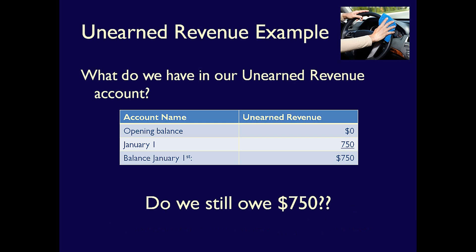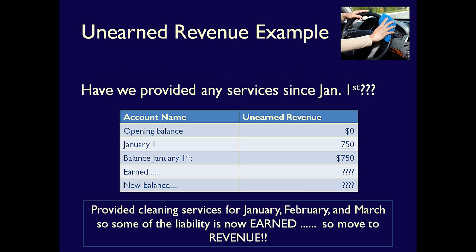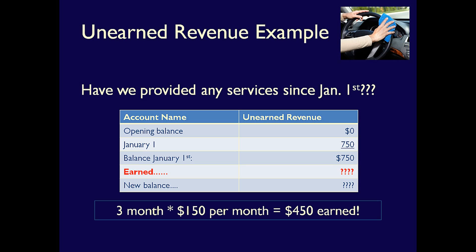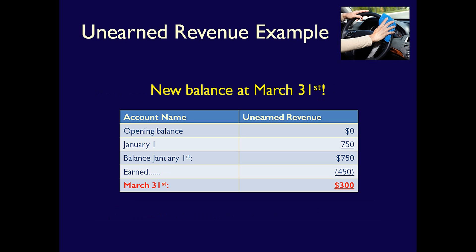Do we still, at March 31st, owe $750 of services to a customer? The answer is no, not anymore. We provided cleaning services for the last three months, so we have to recognize that some of the liability is now gone — settled. We also have to recognize that we earned revenue, so we have to move the value to the revenue account. We provided three months of services at $150 per month, meaning we've earned $450 over the last three months. We have to reduce the liability account by that amount. This means our ending balance in the unearned revenue account has to be updated to $300 — our original $750 less the $450 liability that was settled because we provided services.